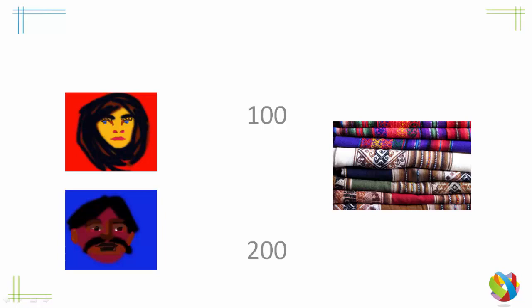Again, Peter is better at producing cloth than Mary — he has an absolute advantage. And this illustrates David Ricardo's point that even if you have an absolute advantage in producing everything, you will still be better off concentrating on the things that you are comparatively better at producing than the other person, and then trading. Let's see an example to show this — it's a little bit counterintuitive at first.